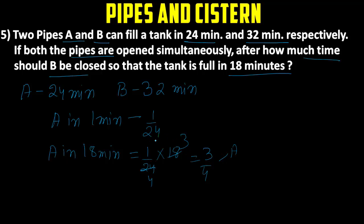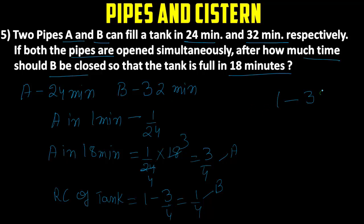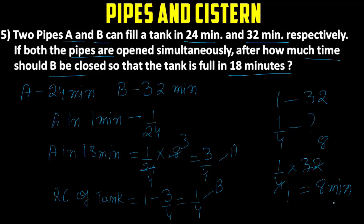If the total capacity of the tank is 1, the remaining capacity = 1 − 3/4 = 1/4. So B needs to fill 1/4 of the tank. Since B fills the whole tank in 32 minutes, it fills 1/4 of the tank in (1/4)×32 = 8 minutes. Therefore, B should be closed after 8 minutes. That is our answer.